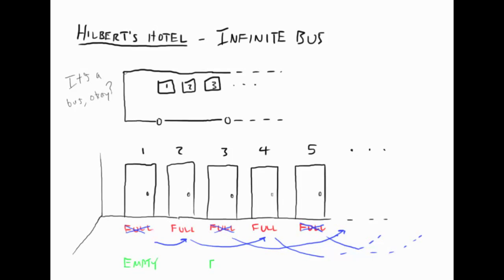So we can put bus passenger 1 in room 1, bus passenger 2 in room 3, and so on. We've now squeezed an infinite bus of extra guests into the hotel.